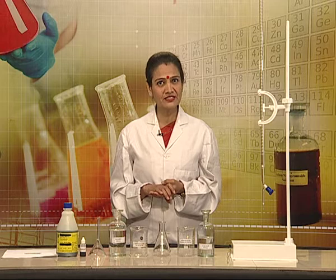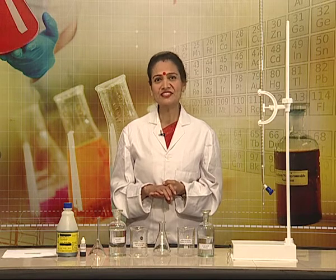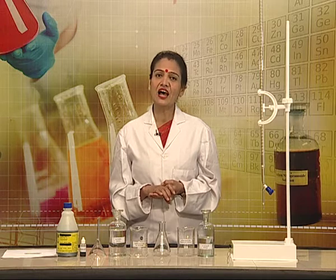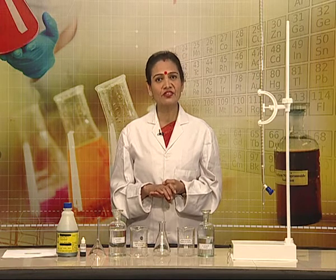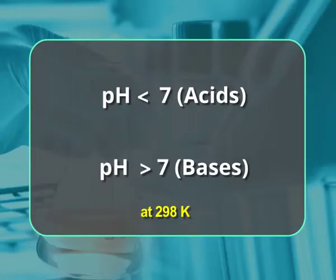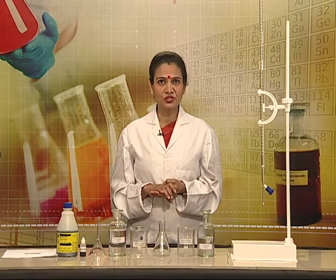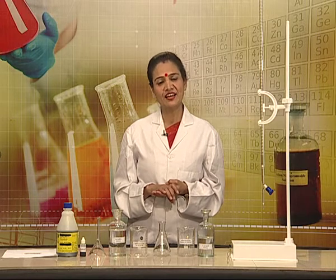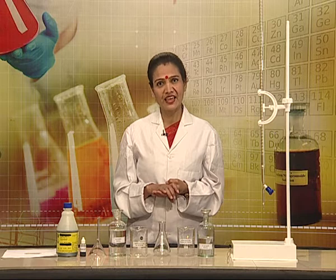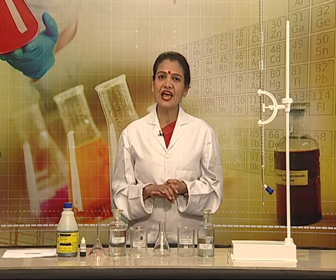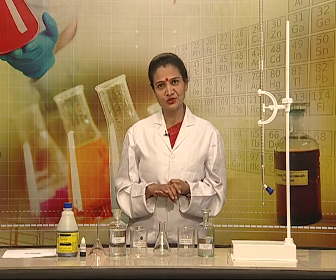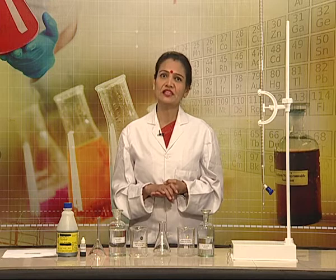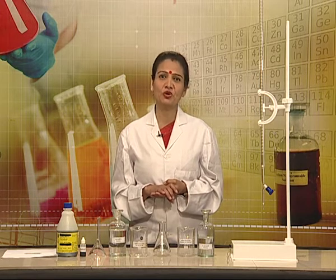Do you remember some fundamental facts related to acid-base chemistry? Let's revise quickly. Acids produce hydrogen ions and bases produce hydroxyl ions in solution. pH is a scale to measure hydrogen ion concentration in a solution. pH of acids is less than 7, while pH of a base is more than 7. During the process of neutralization, hydrogen ions from acid combine with hydroxyl ions of a base and water is formed. Strong acids and strong bases are completely dissociated in solution.